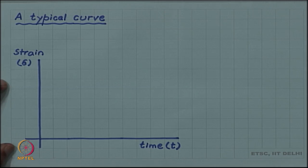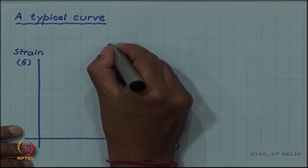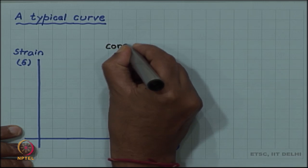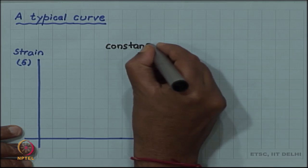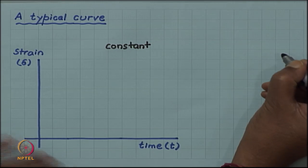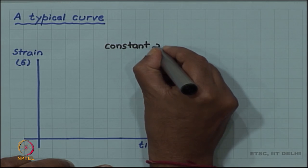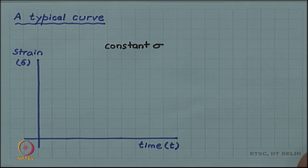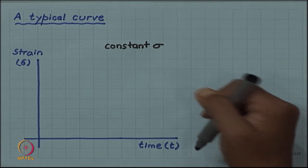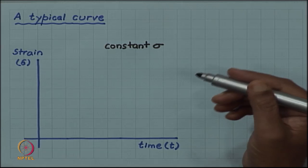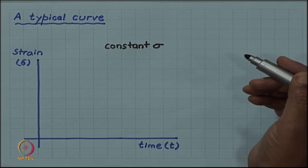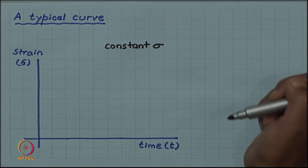The results of creep test is usually plotted as a creep curve, where we plot strain as a function of time because we are keeping the stress constant. Unlike the stress-strain diagram which we had before, with constant stress we have a strain-time diagram because it is a continued plastic deformation as a function of time.